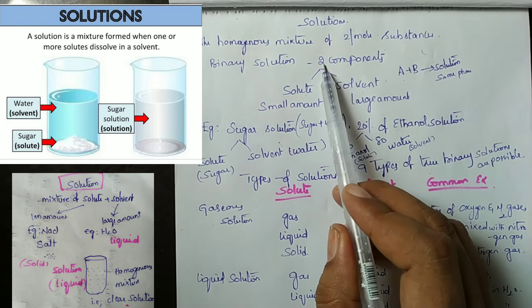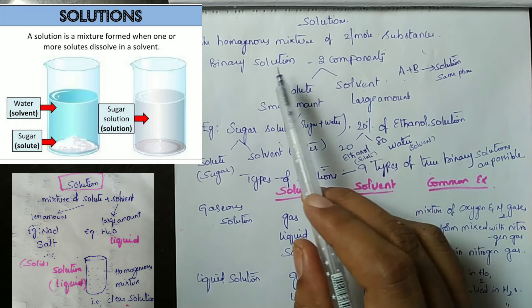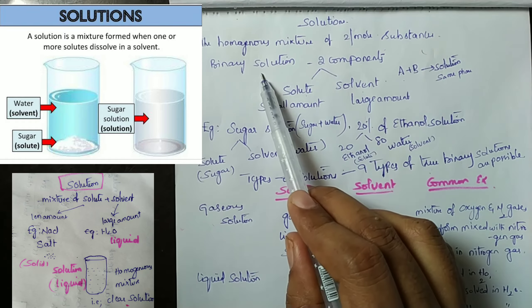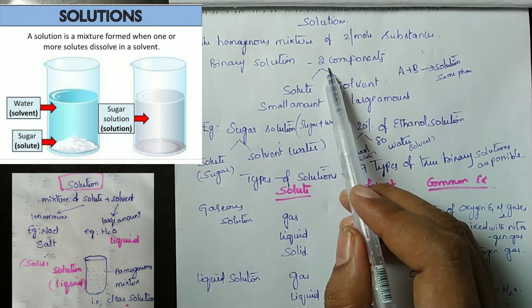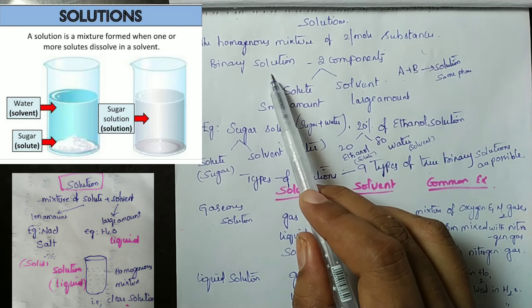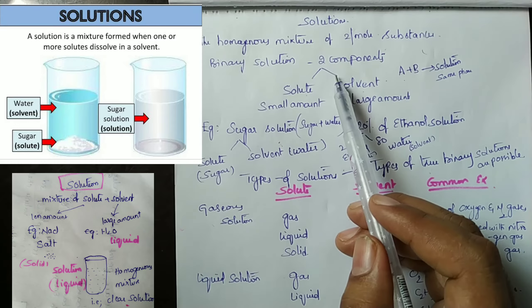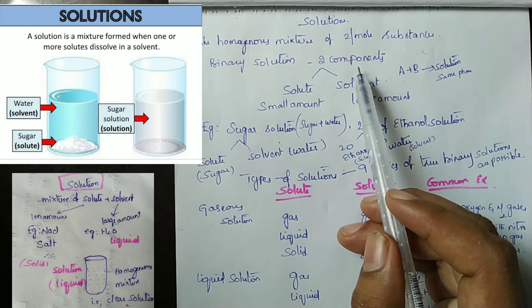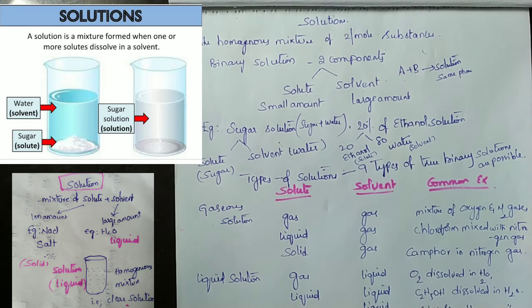If two components are present in a solution, it is called a binary solution. Three components are called a ternary solution, and four components are called a quaternary solution.